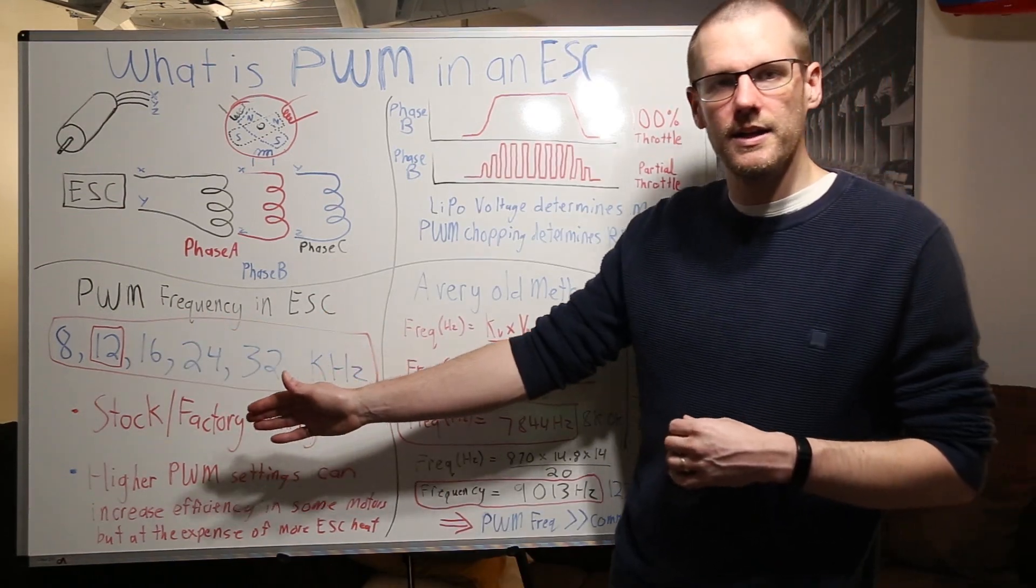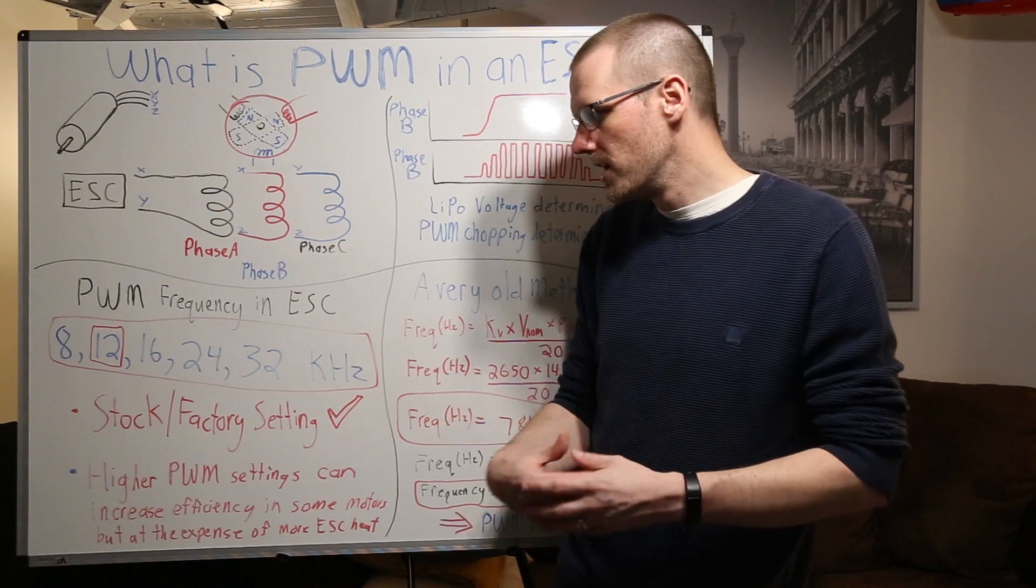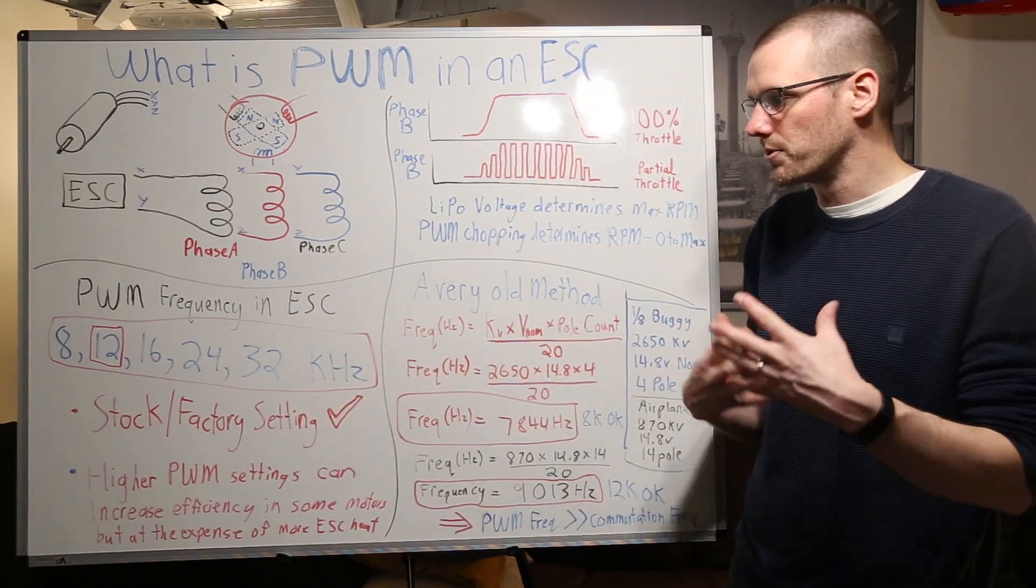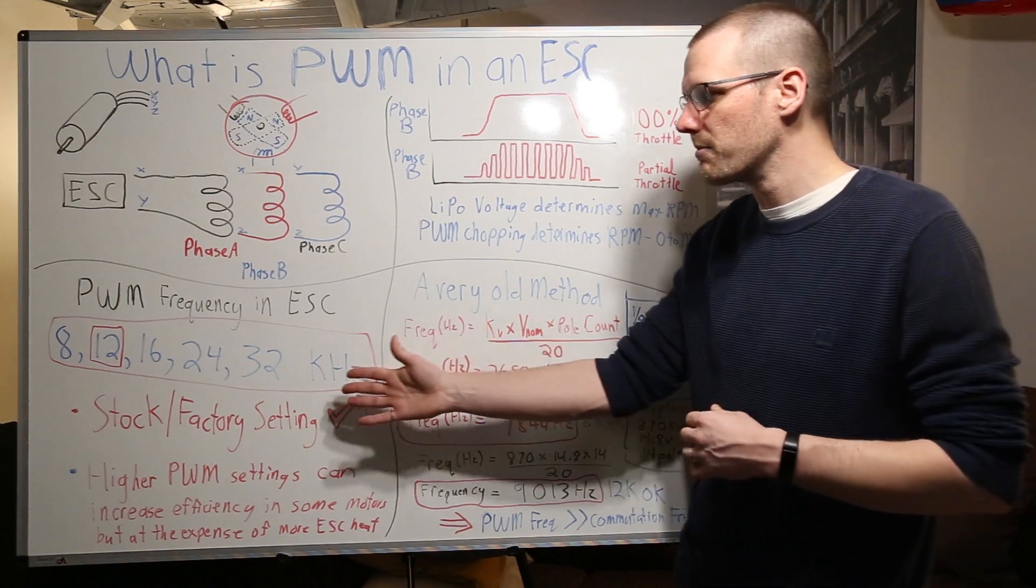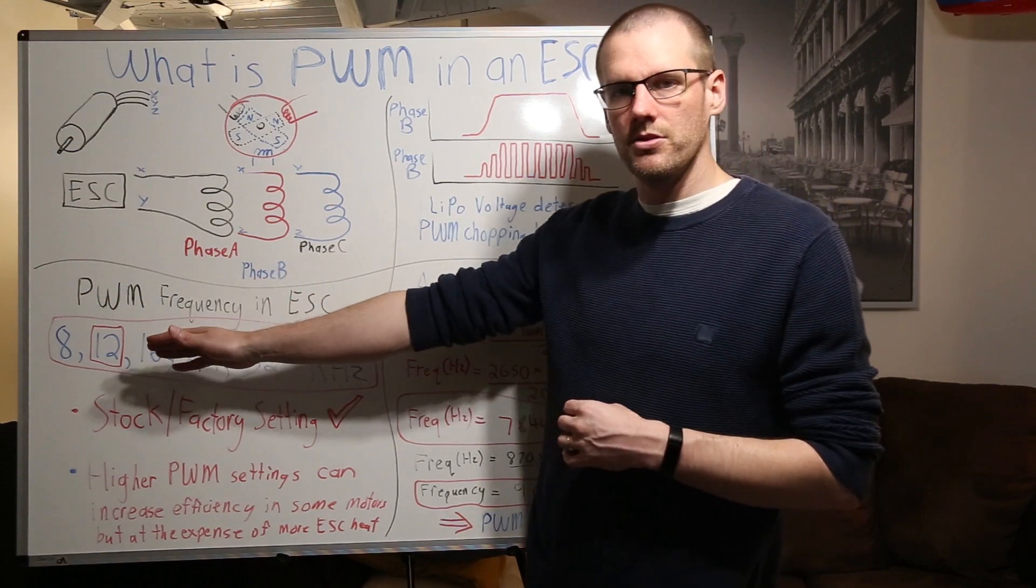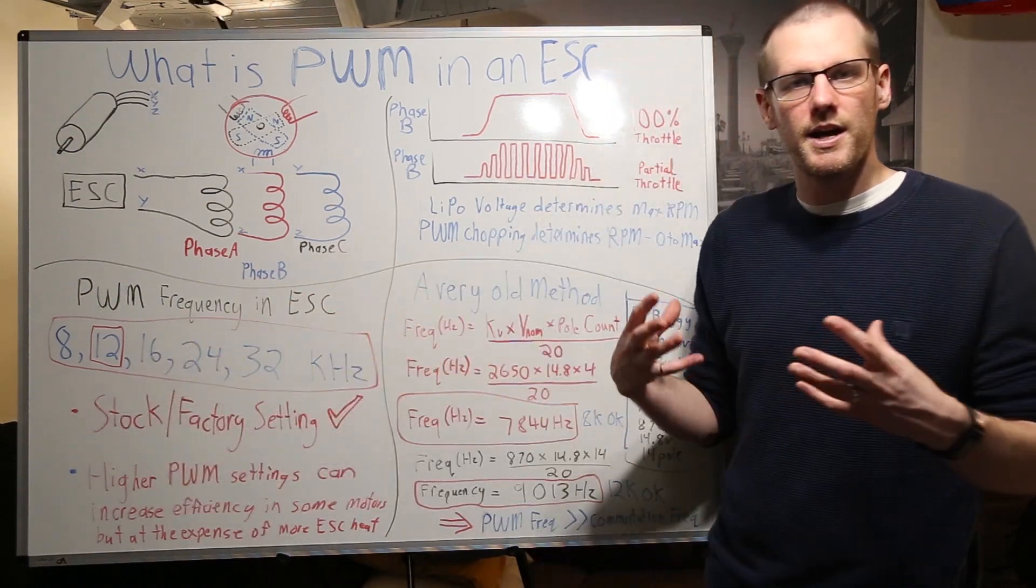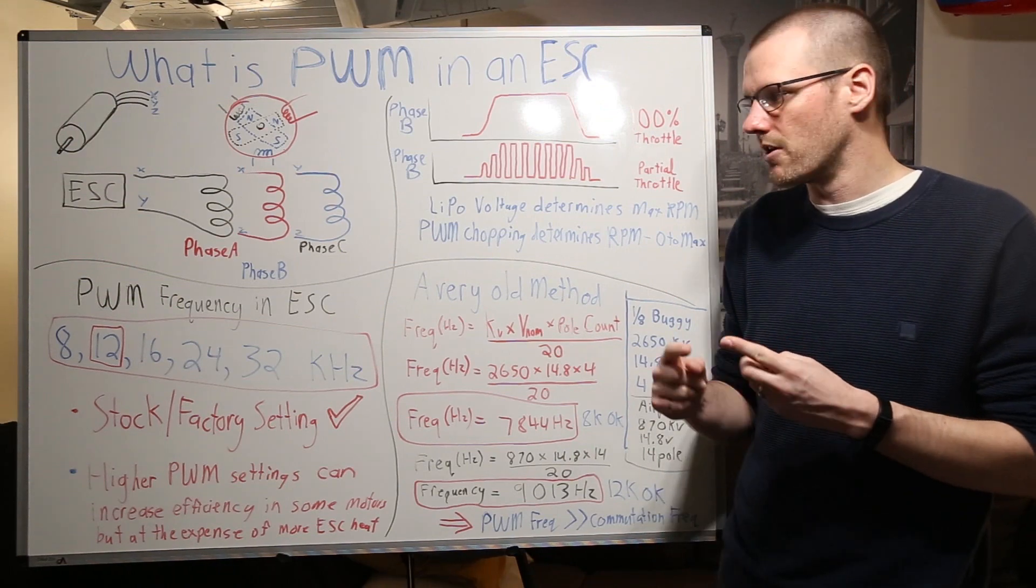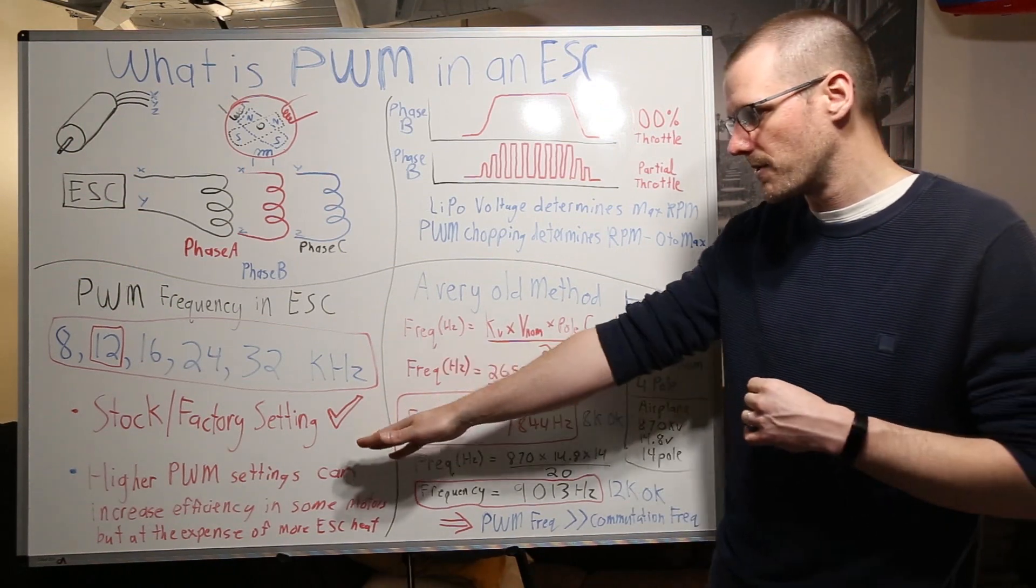Now you can go ahead and jump into your speed control program change the rate of that PWM function if you plan to do so. However I would recommend that this is something for the more advanced user. If you are planning to do that what you'll want to make sure is when you go ahead and change the settings that you're able to monitor performance and also monitor heat and we'll talk about why.